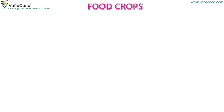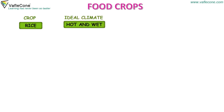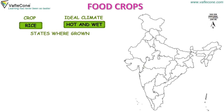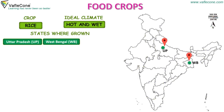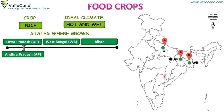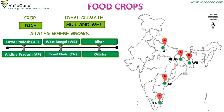Now let's discuss food crops in detail. Rice: the ideal climate for rice is hot and wet. States where rice is grown are Uttar Pradesh, West Bengal, Bihar, Andhra Pradesh, Tamil Nadu and Odisha.